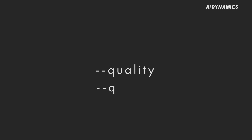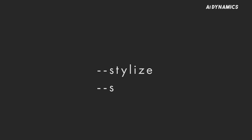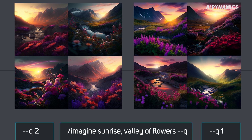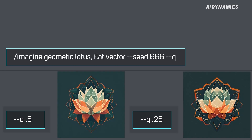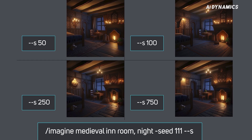The quality parameter affects how much detail is added to an image. Stylize affects how close the image is to the prompt. If you want to explore these parameters further, I have included a link to the detailed explanation in the description below, so make sure to check it out.